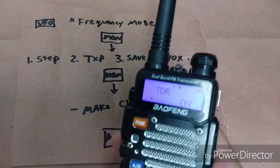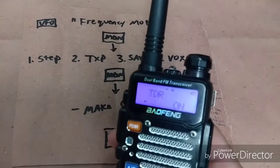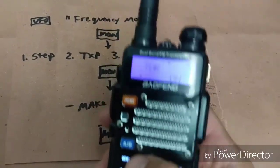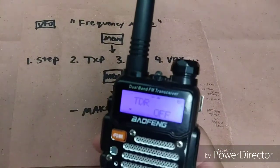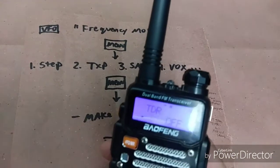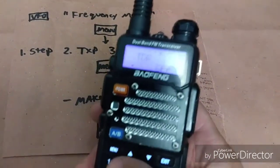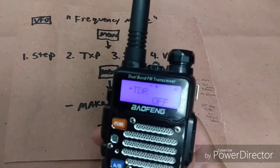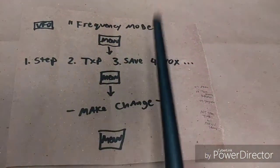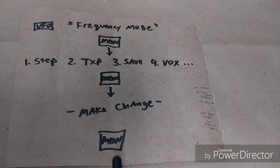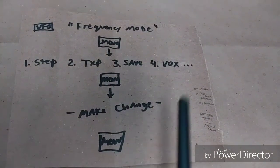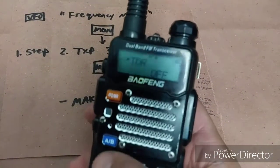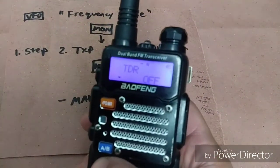Now I can use the arrow to turn TDR off, and the third time I press menu it saves the setting. But I like listening to both frequencies, so I'm going to change it back.